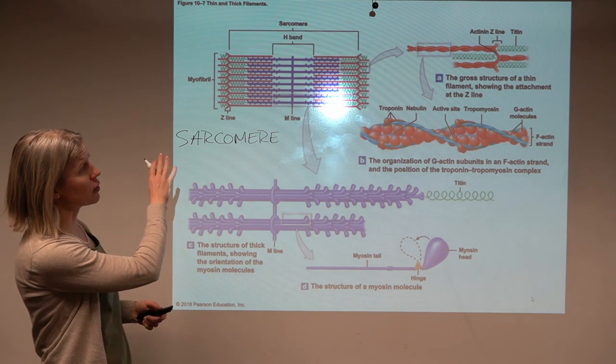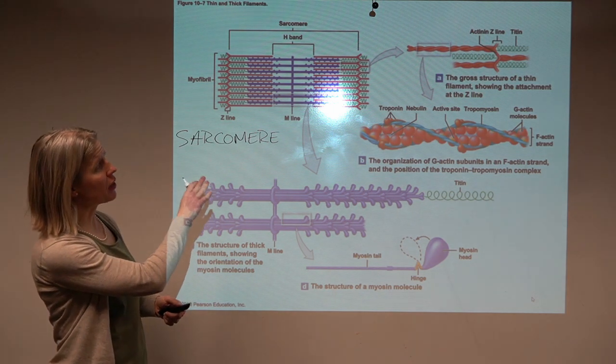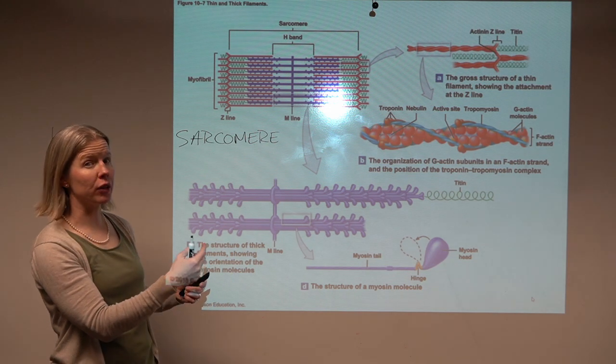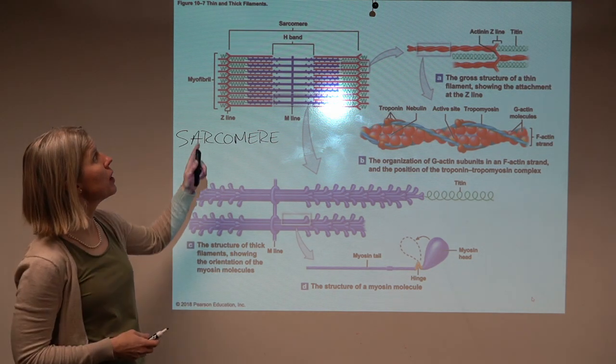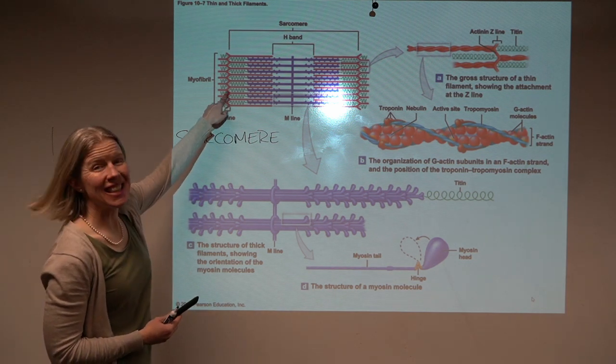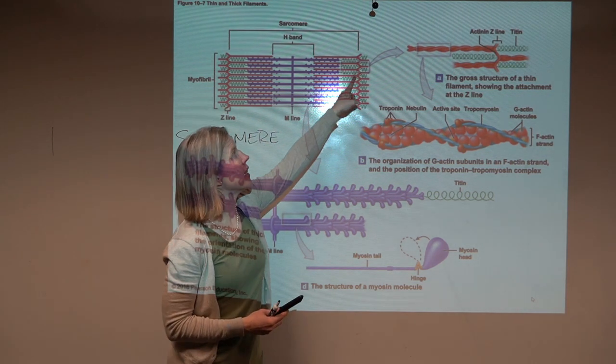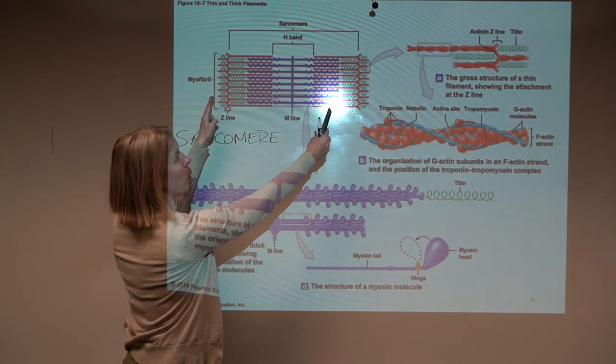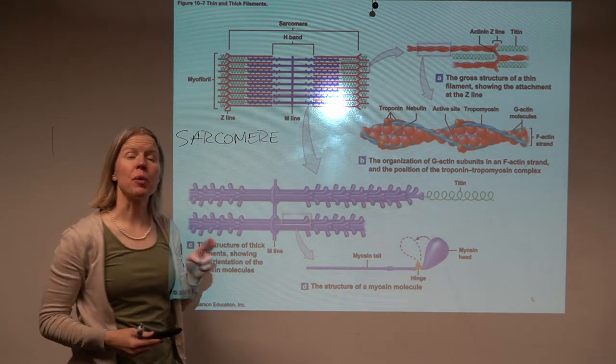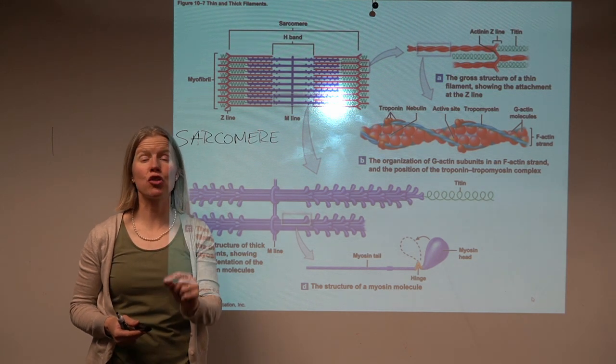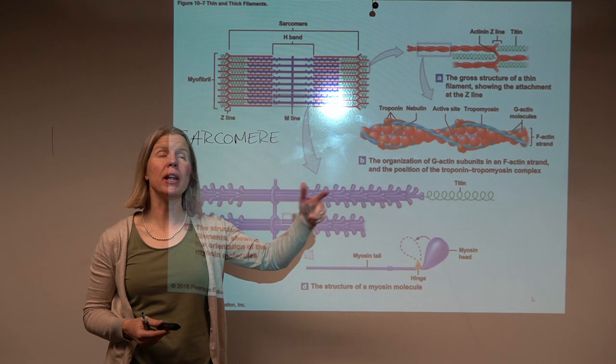So as we look at a sarcomere, a couple things to keep in mind before we dive in too much on how it actually works. A sarcomere goes from what they call Z-line to Z-line. So when I say there's 10,000 of them, it's from here to here is one, and you might have lots of this repeating. And that's what gives skeletal muscle, in particular, that striated appearance, these repeating bands.